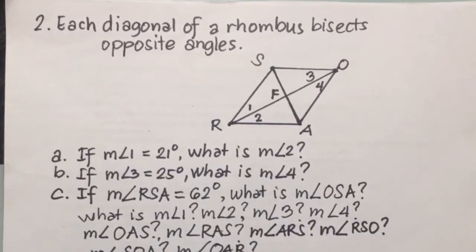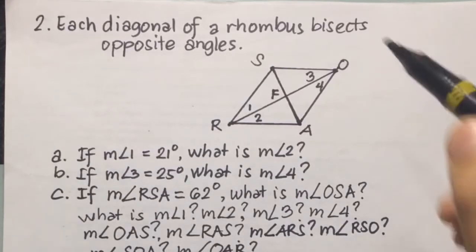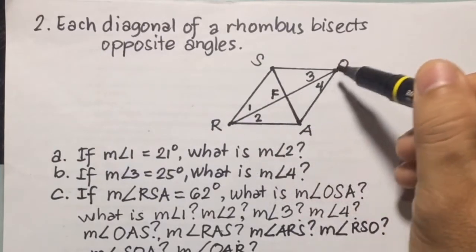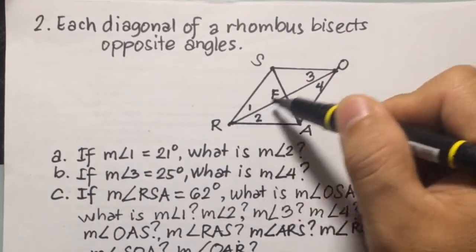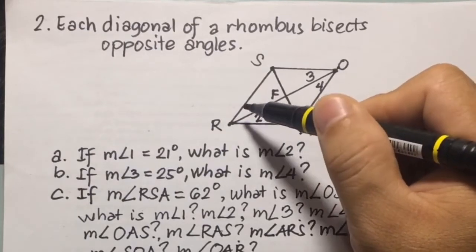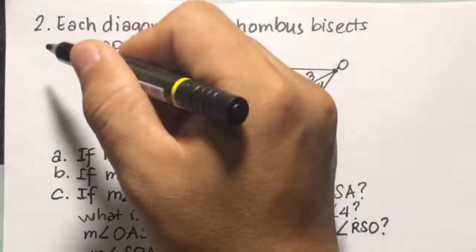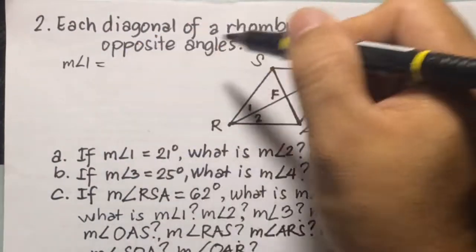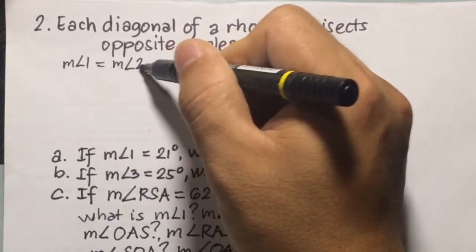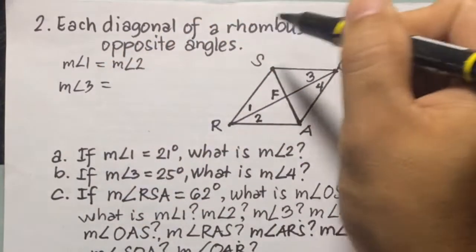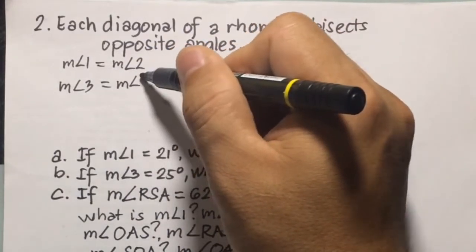Theorem number 2: Each diagonal of a rhombus bisects opposite angles. If we have diagonal SA and diagonal RO, then this diagonal divides the two angles — angle 1 and angle 2 — into two congruent angles. So measure of angle 1 equals measure of angle 2, and measure of angle 3 equals measure of angle 4.